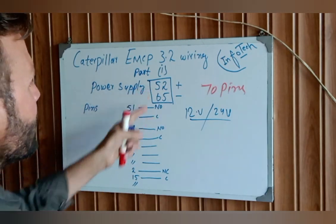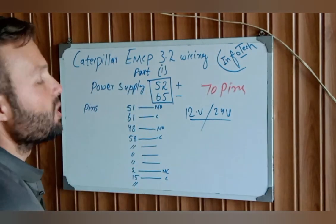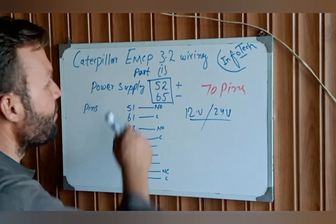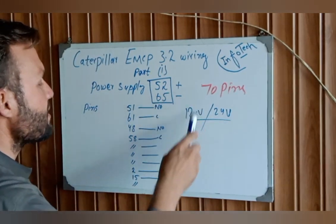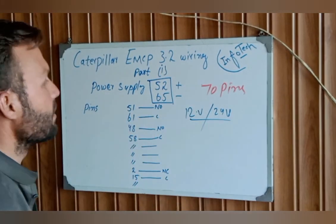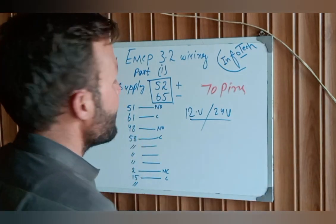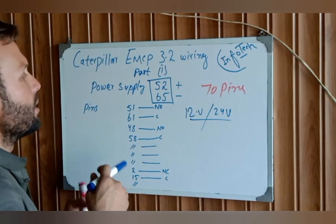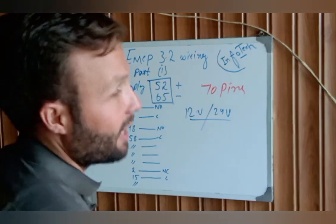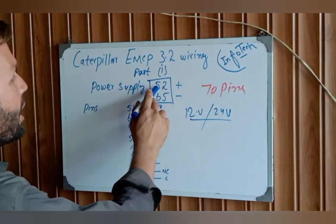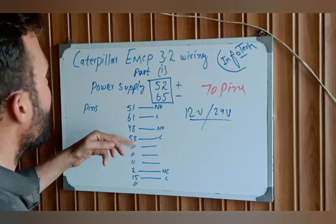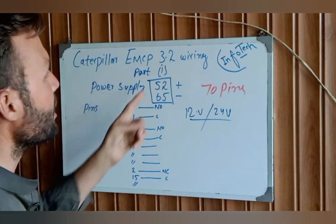Take the reading with the multimeter - you should get 12 volt or 24 volt. If you don't have supply on these two pins, your EMCP will not open. You trace these two wires step by step and check where the wire is cut or broken, then reconnect and check it again.